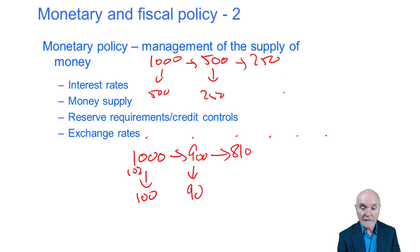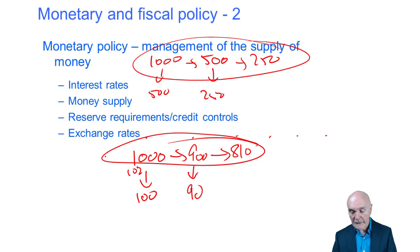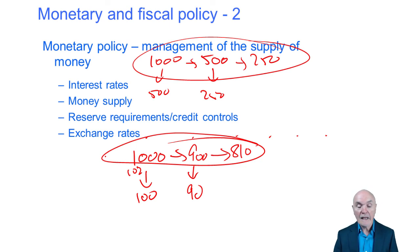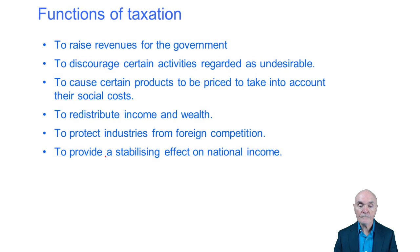If instead the reserve requirement is 50%, of a £1,000 deposit only £500 can be lent on. That money diminishes much more quickly as it cycles through, and the total money created through the banking system is much less. Finally, the government might try to manipulate exchange rates, though this is notoriously difficult — international money markets are so powerful that governments are rarely masters of the exchange rate.